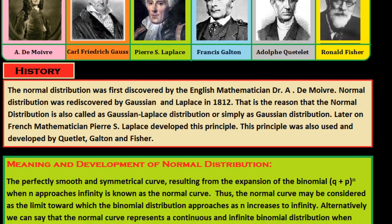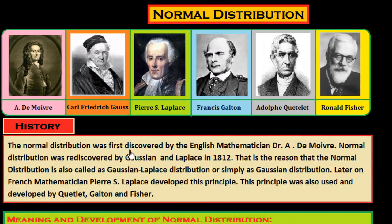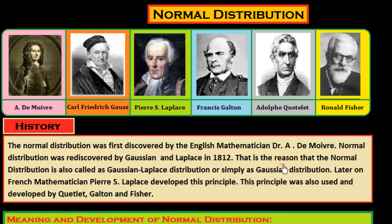First I would like to explain the history of normal distribution. The normal distribution was first discovered by the English mathematician de Moivre. It was rediscovered by Gauss and Laplace in 1812, which is why the normal distribution is also called the Gaussian-Laplace distribution, or simply the Gaussian distribution. Later, the French mathematician Laplace developed this principle, which was also used and developed by Quetelet, Galton, and Fisher.